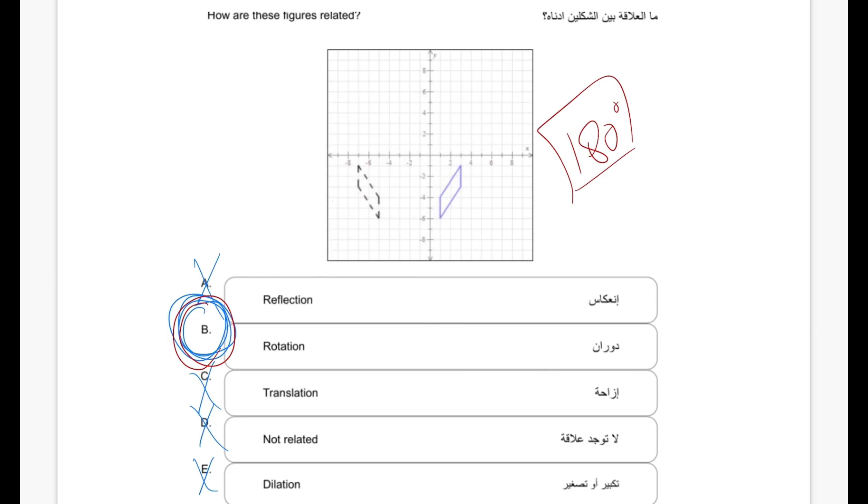Try to imagine moving this side all the way over here, and rotating this side all the way over here, and rotating this side over here, and this one as well over here. You would realize that this shape is being rotated to match this following shape. So the answer which best fits the problem is rotation.